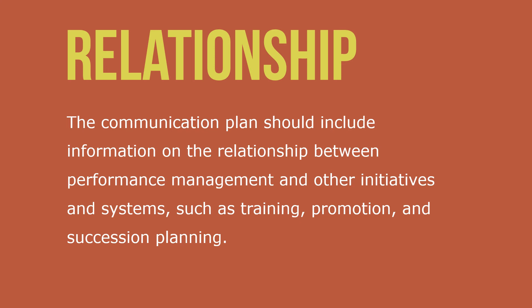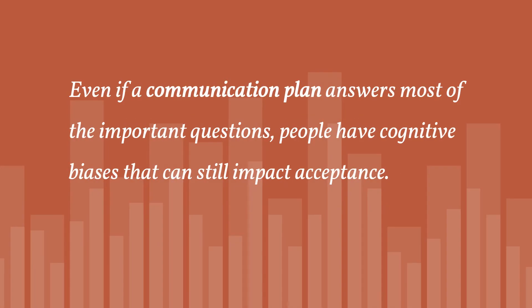The communication plan should include information on the relationship between performance management and other initiatives and systems, such as training, promotion, and succession planning. Even if a communication plan answers most of the important questions, people have cognitive biases that can still impact acceptance.